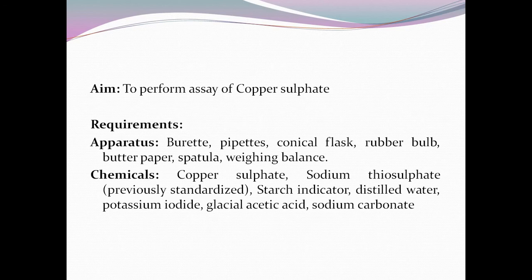The aim is to perform assay of copper sulphate. Apparatus required: burette, pipettes, conical flask, rubber bulb, butter paper, spatula, and weighing balance. Chemicals required: copper sulphate, sodium thiosulphate (previously standardized — it is a secondary standard, so its concentration must be verified before proceeding), starch indicator, distilled water, potassium iodide, glacial acetic acid, and sodium carbonate.